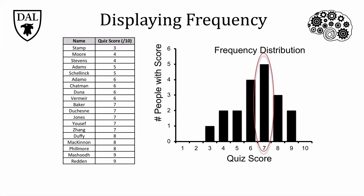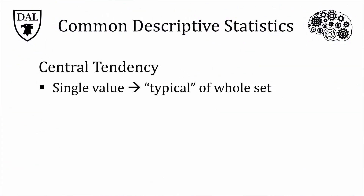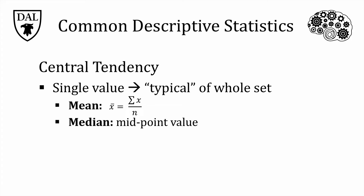A frequency distribution is a great way to eyeball your data, but it's not the only way. Researchers use a number of descriptive statistics to communicate findings in a dataset. Measures of central tendency produce a single value that is typical of the whole dataset. These are handy because they relay information about the data without having to scan the whole collection. The most commonly reported measure of central tendency is the mean, which is the mathematical average, represented by the symbol x-bar. To calculate the mean, you add up, or sum — shown by the sigma symbol — all of your values (x), then divide this sum by the total number of observations (n). The median is the midpoint value in your dataset, while the mode is the most frequently occurring value.